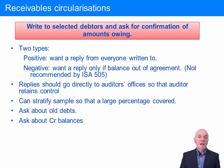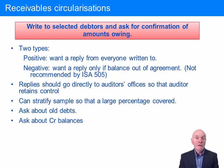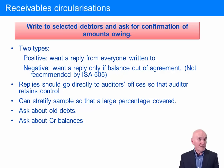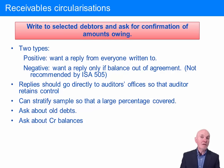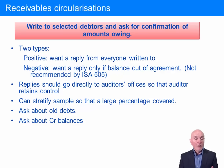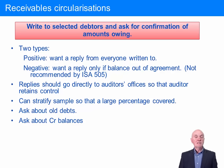Negative circularization is where you say to the client's customers: only reply if you don't agree. These are almost useless, because not everybody replies to these letters anyway — there's no legal obligation to bother filling them in. Some people can't fill it in because they simply don't keep permanent records of what they owed several months ago. So if you don't get letters back, you don't know whether it's because they agree, or because they can't be bothered finding out. Negative circularizations are not really very good audit evidence.